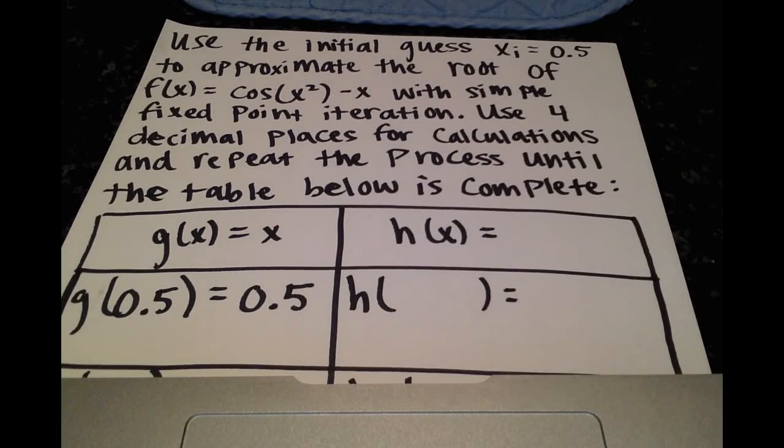Hello, how's everyone doing? Alright, we have a numerical methods problem, an example with the simple fixed point iteration. So let's jump right into it.